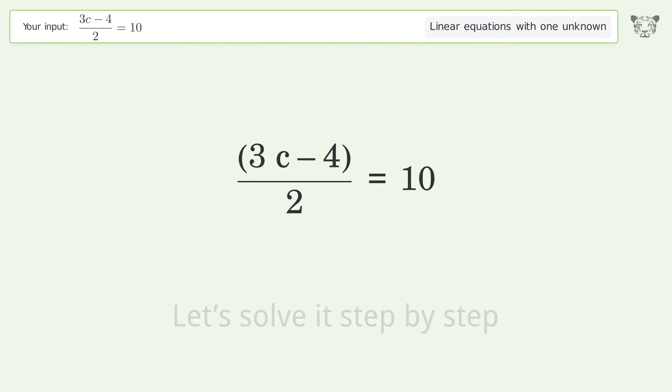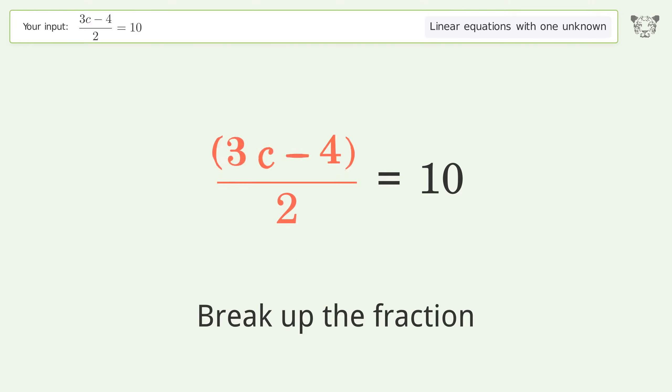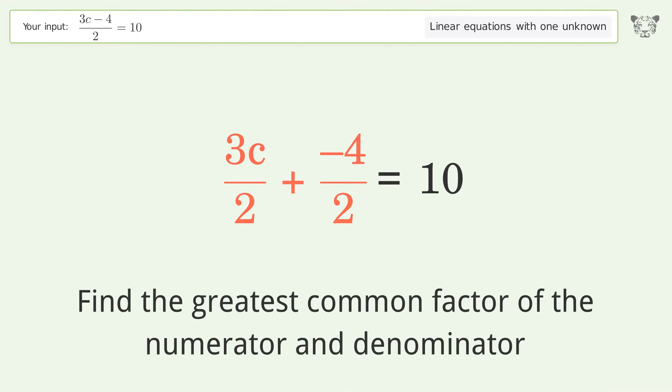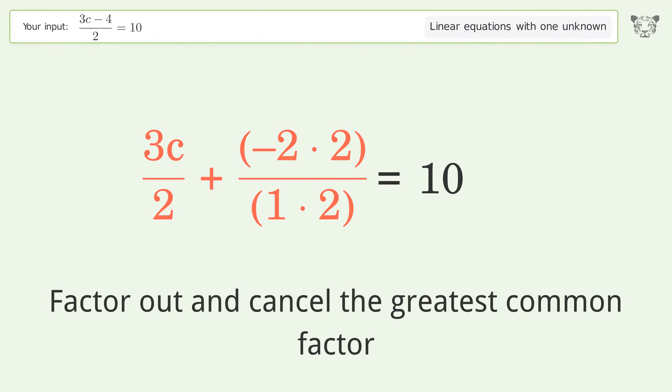Let's solve it step by step. Simplify the expression. Break up the fraction, find the greatest common factor of the numerator and denominator, then factor out and cancel the greatest common factor.